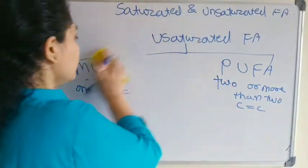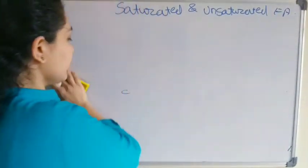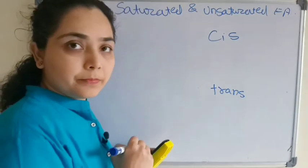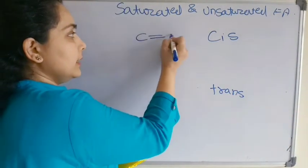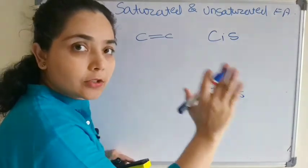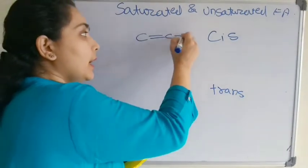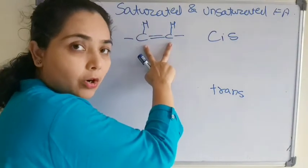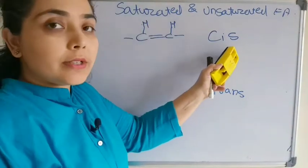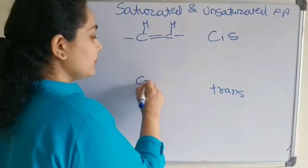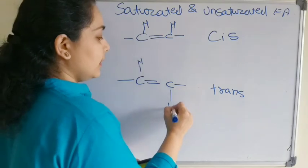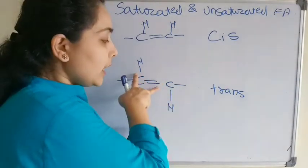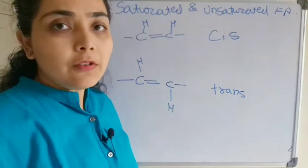Monounsaturated and polyunsaturated fatty acids exist in two forms: cis form and trans form. In the cis form, the two hydrogen atoms attached to the carbons involved in the double bond are on the same side of the double bond. In the trans form, those hydrogen atoms are on opposite sides of the double bond.